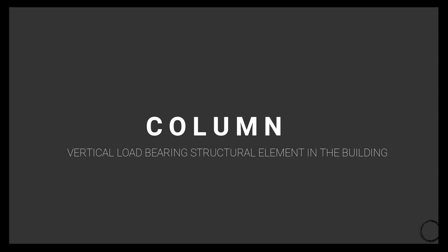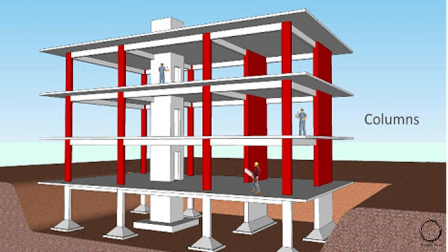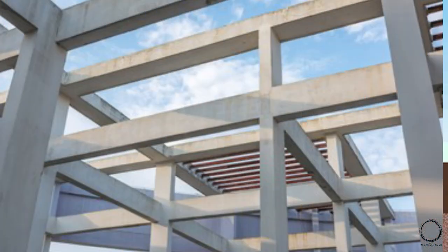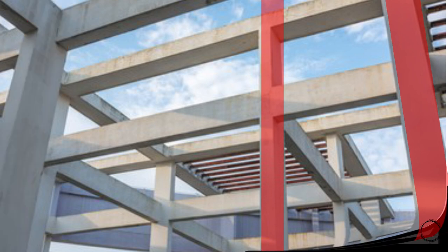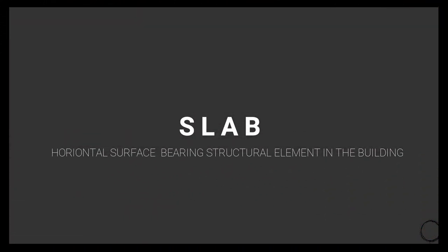The next term is interlinked with beam — that is column, which means a vertical load-bearing structural element in the building. Looking at the image, the vertical supports marked in red are the columns. In the same image you can see both: the horizontal ones are the beams and the vertical ones are the columns.